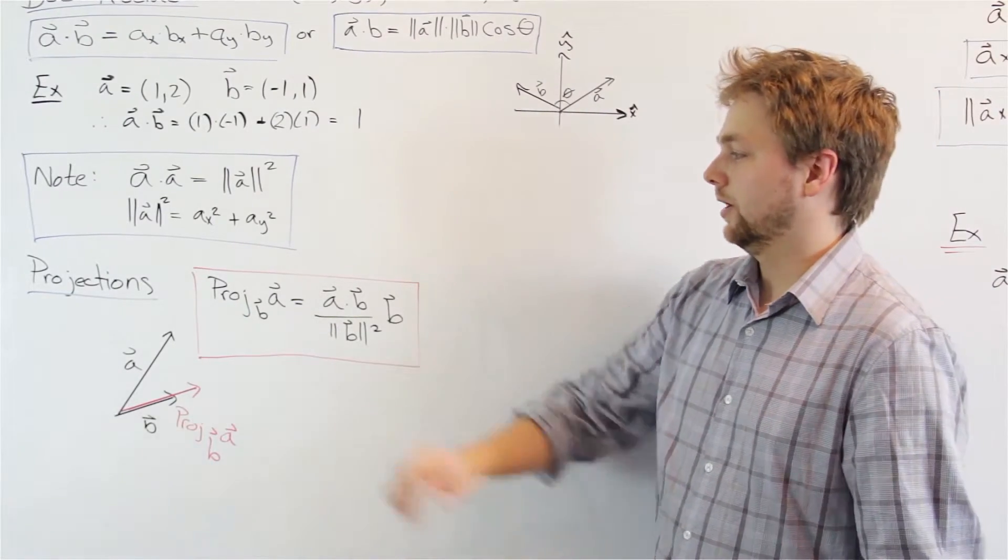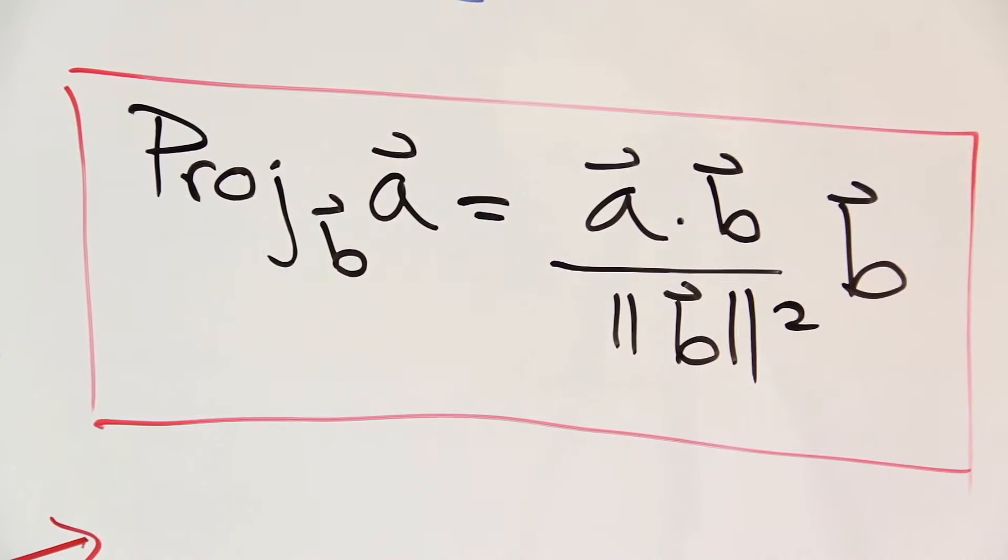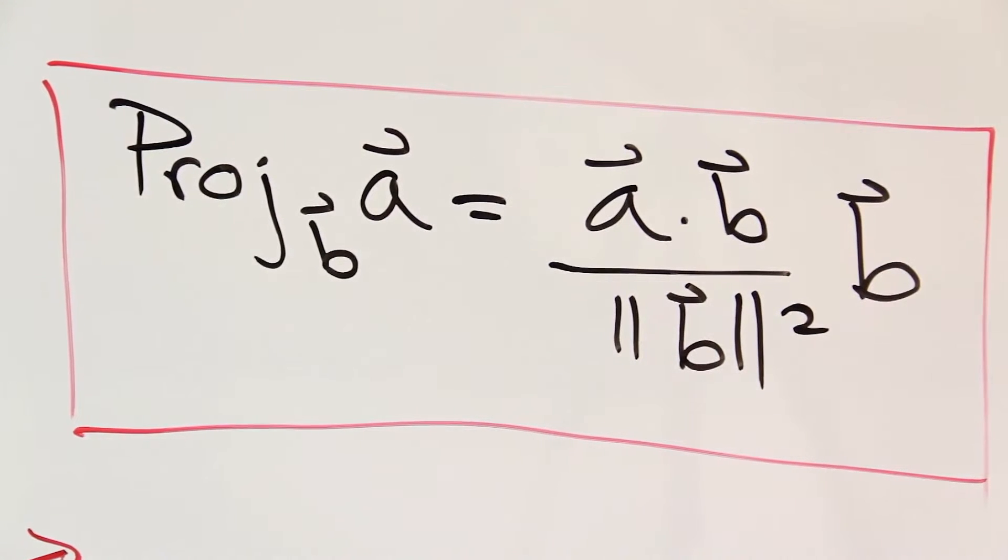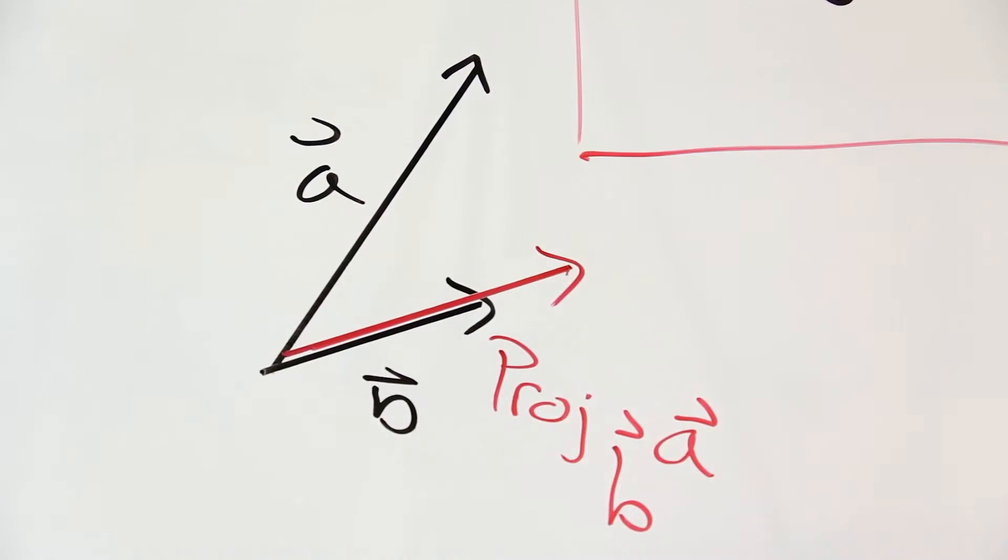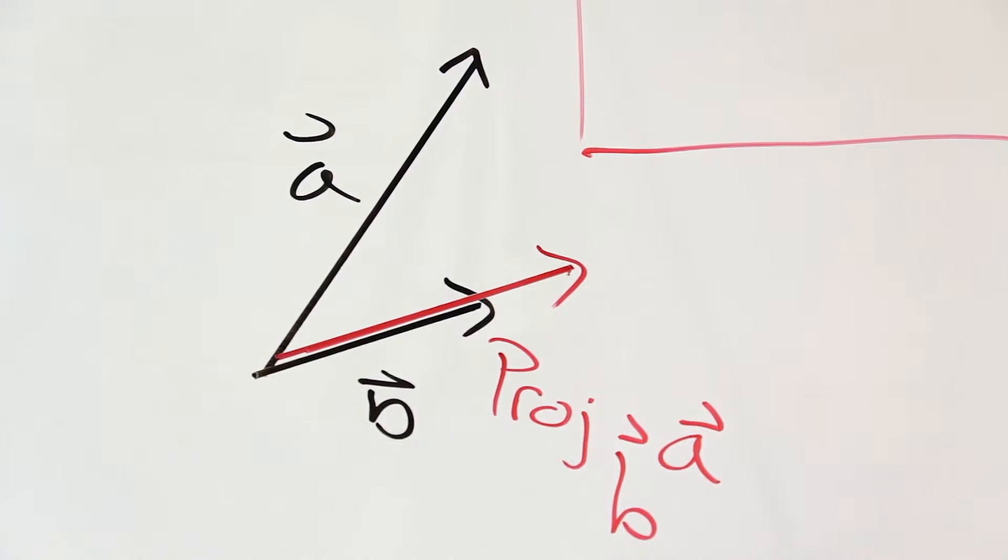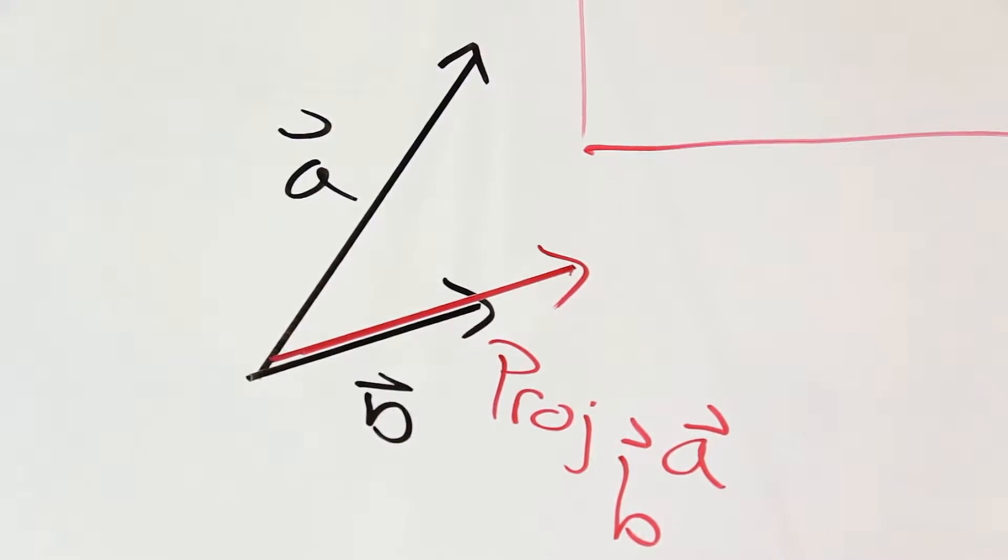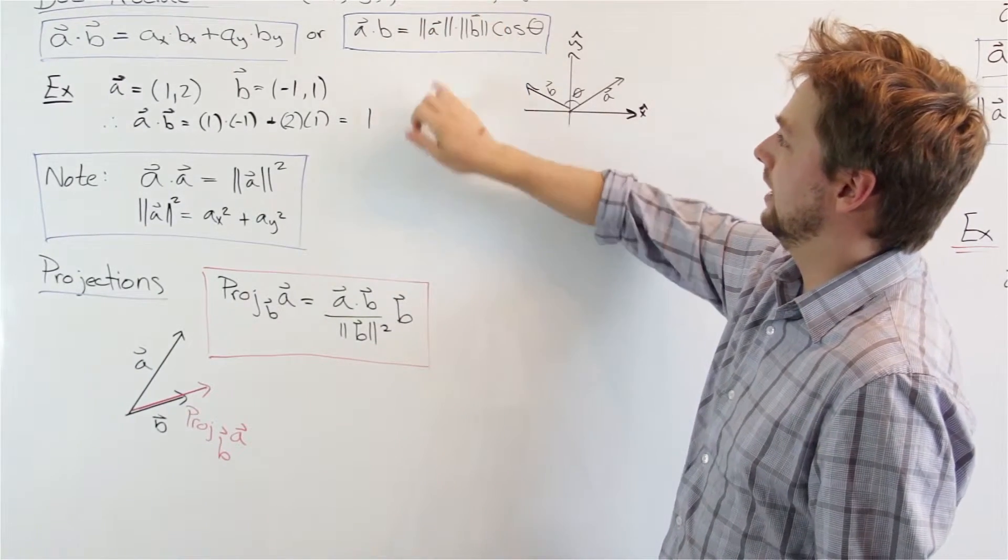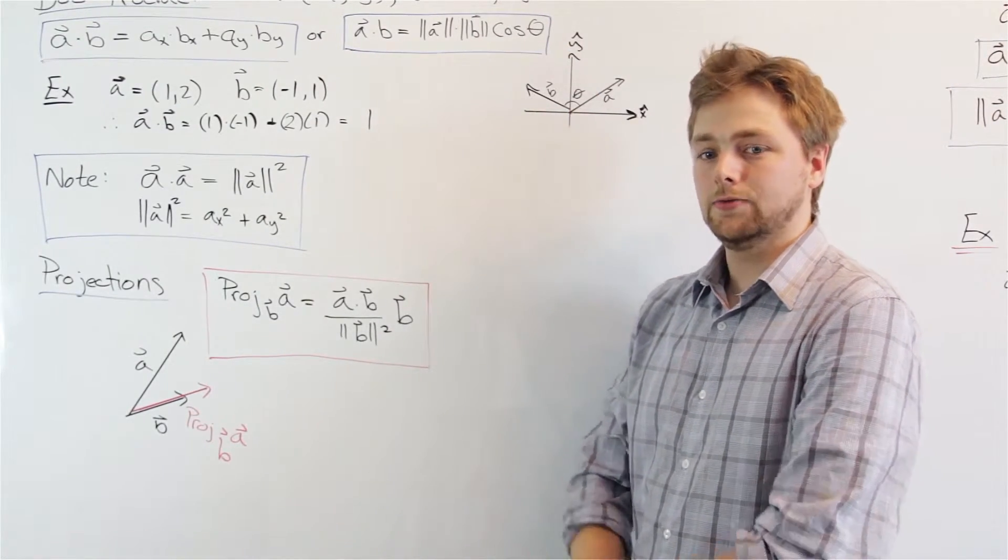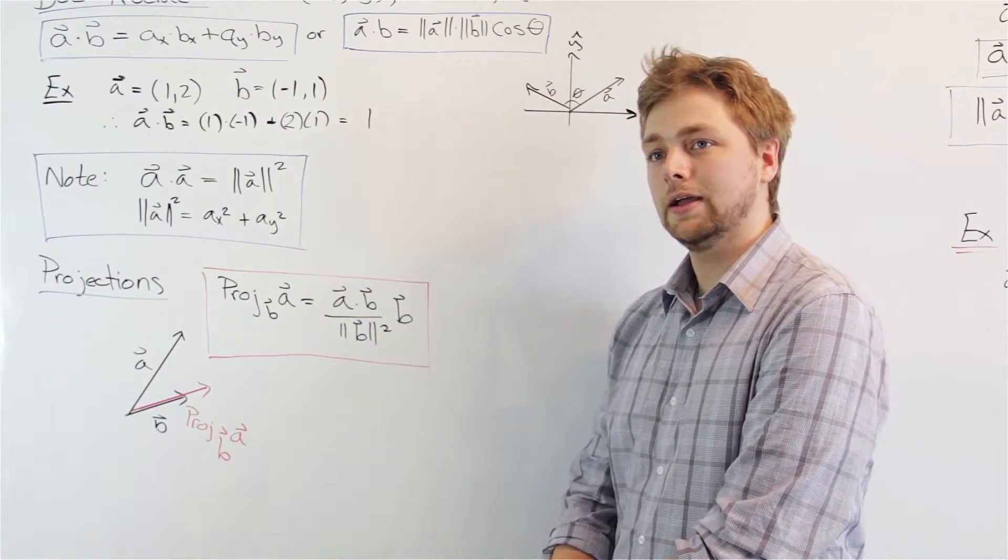Another application of the dot product that we can make use of are projections. We read this as the projection of a onto b. Well, what does this mean? What this means is if we're given a vector a and a vector b, the projection would be if we took a and cast a shadow onto b. We can see where this comes from because if we had the dot product by itself and b was a unit vector or had length 1, what this formula would look like is the magnitude of a times cos theta, which hopefully you all recognize from our simple trigonometry is that would be the length of vector a in the b direction.